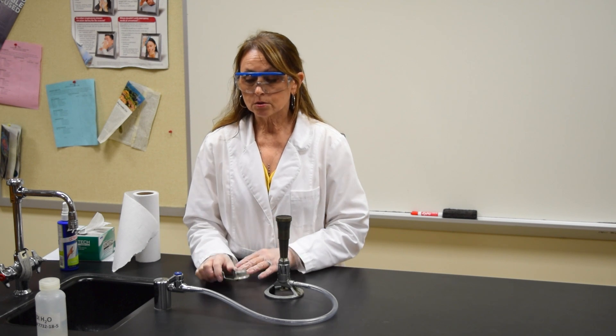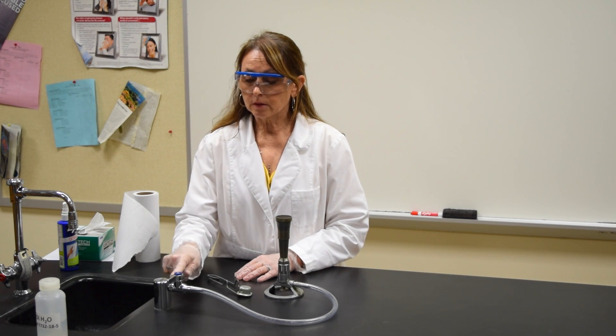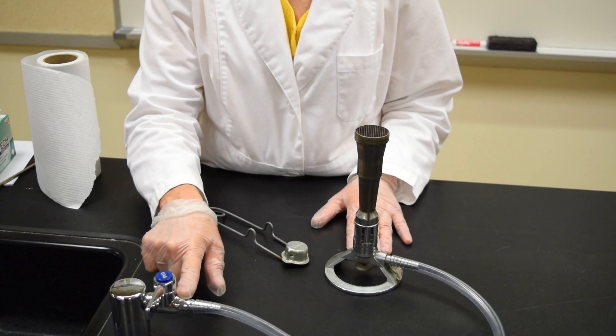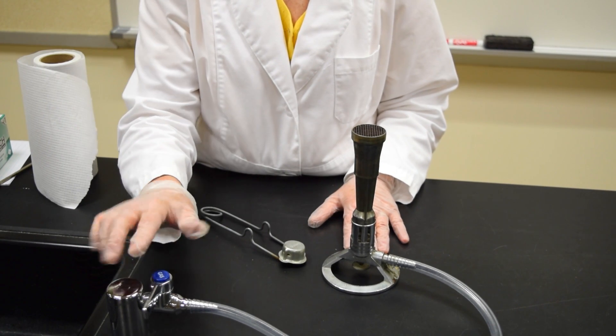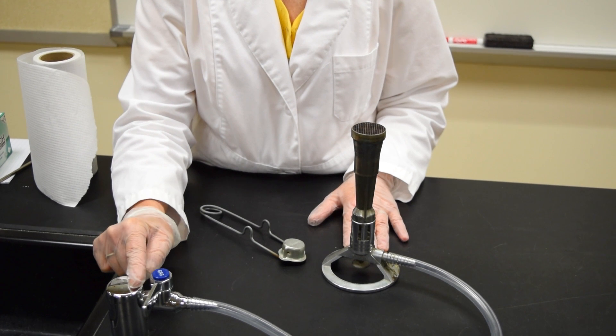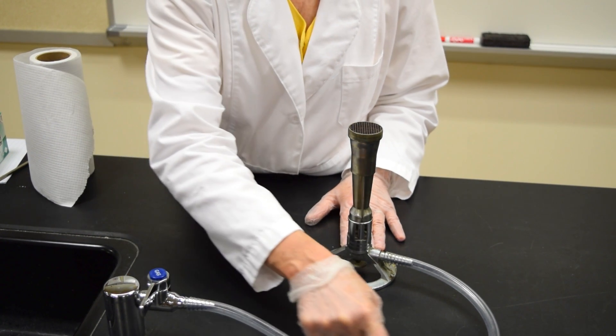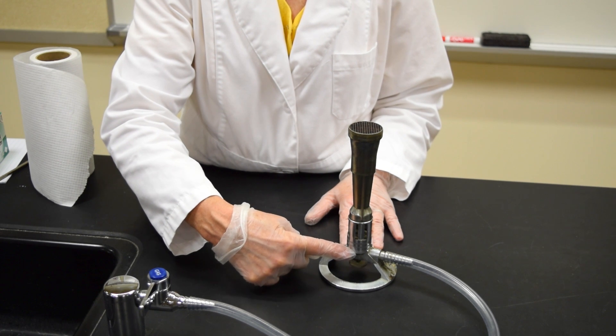To turn on the Bunsen burner, the gas nozzle at this point should be perpendicular. The handle should be perpendicular to the nozzle. That's the off position. Connecting the gas nozzle to the Bunsen burner is a piece of Teflon tubing.